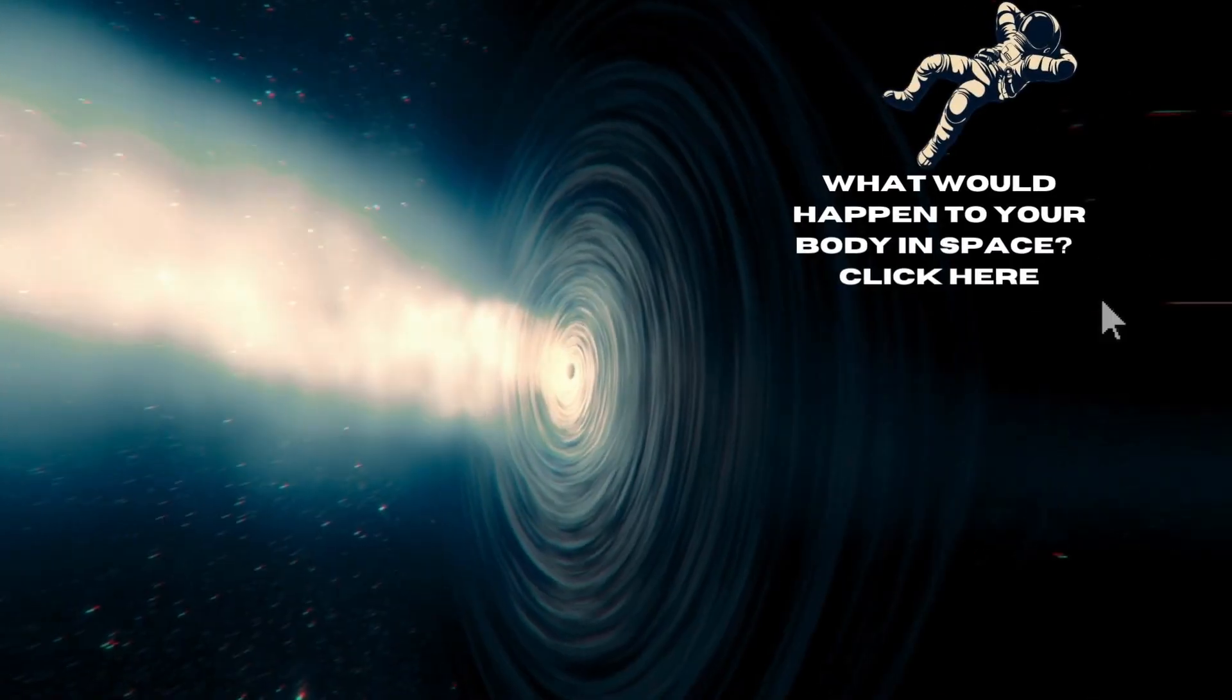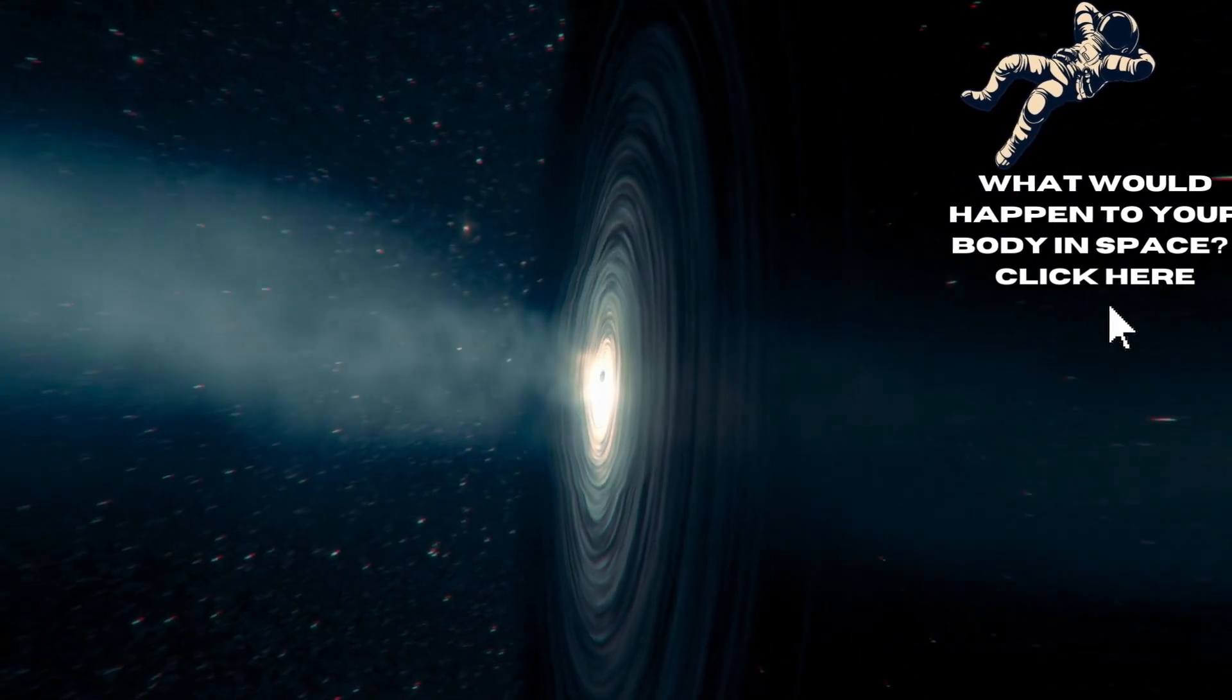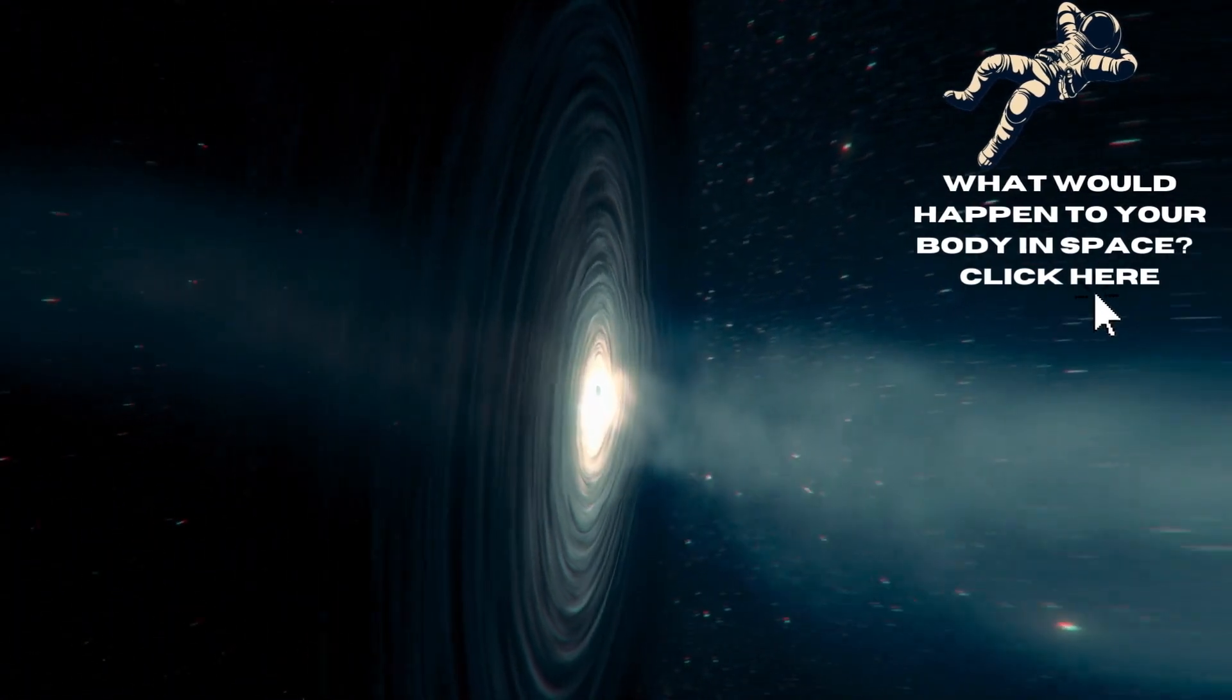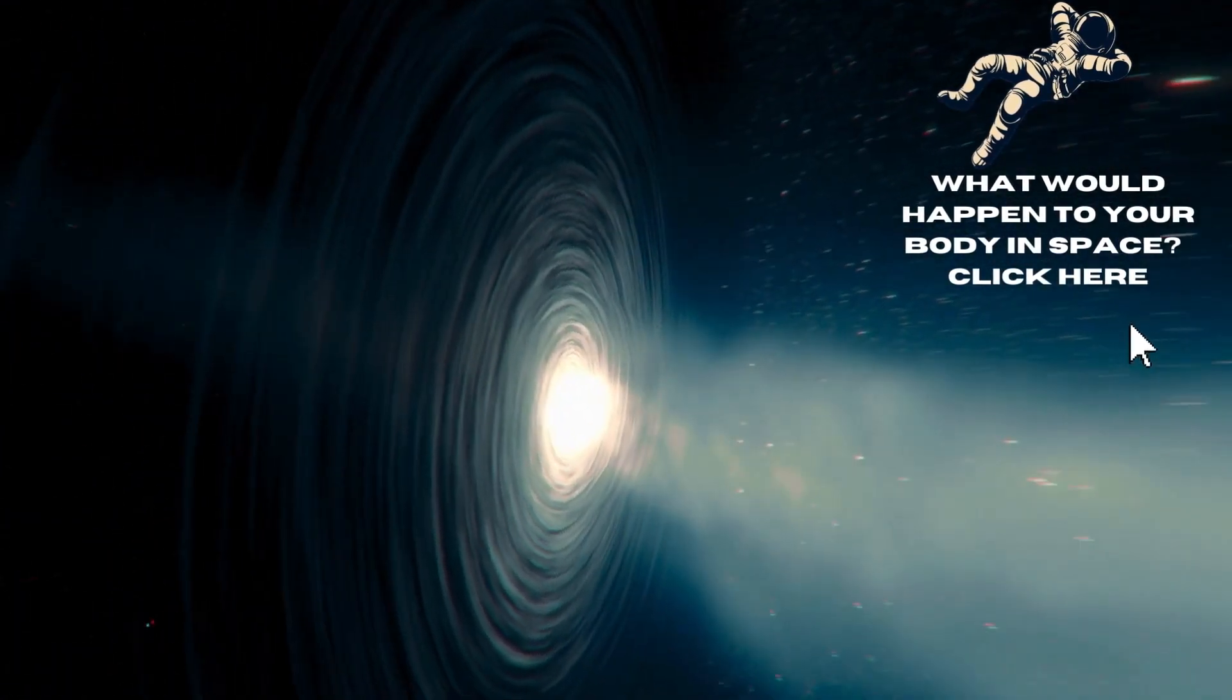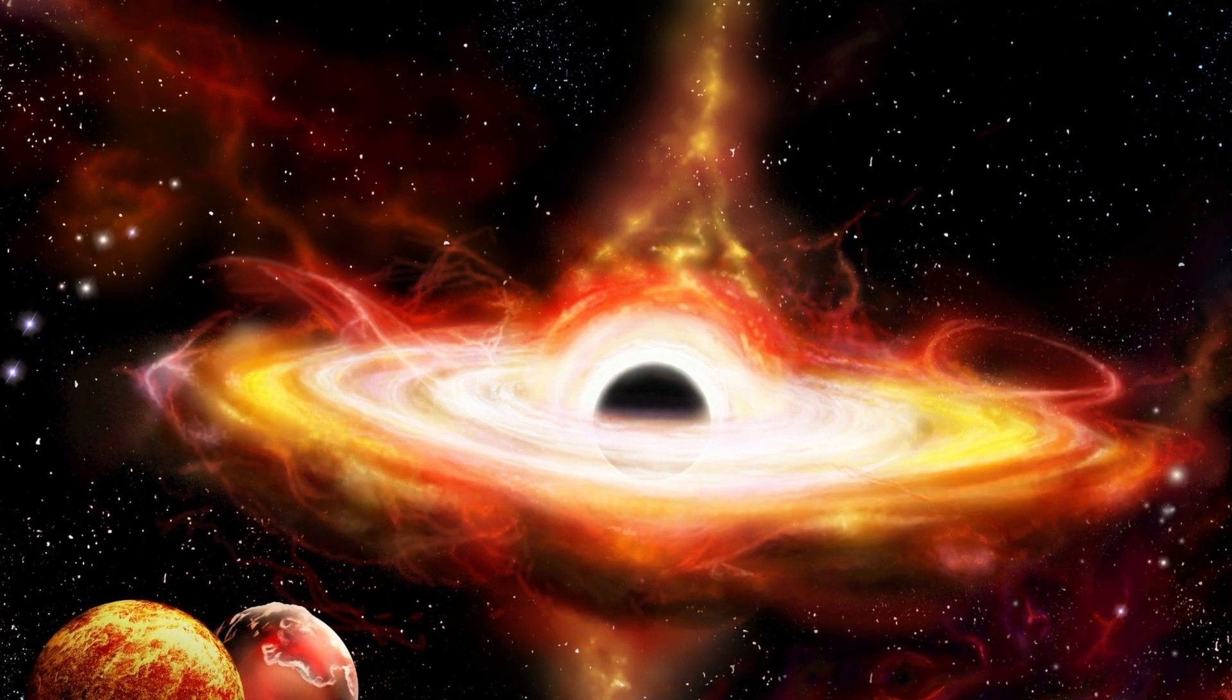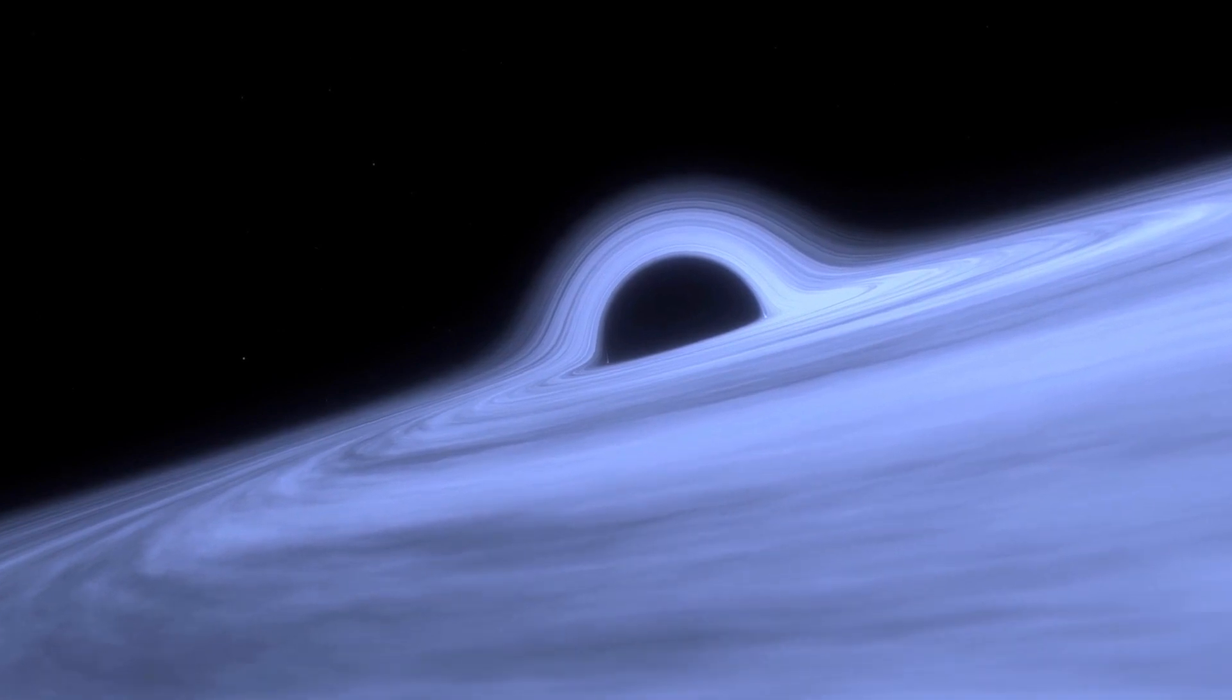Stellar black holes are the most prevalent type. They can span a distance of around 9 miles, 15 kilometers, and weigh as much as 20 suns. You would be entirely destroyed if you were being drawn into a stellar black hole before you even reached the event horizon. Decide on a supermassive one, then.